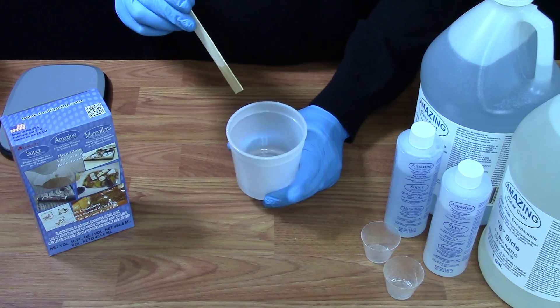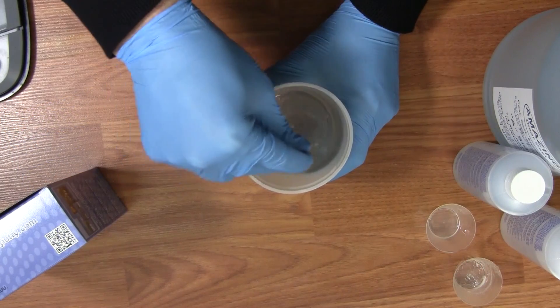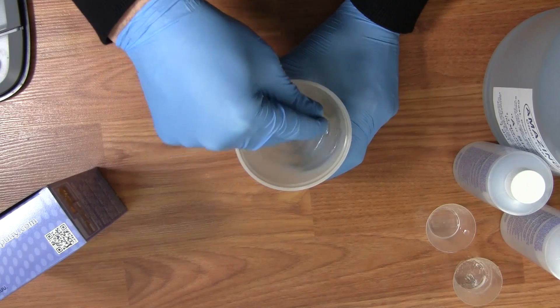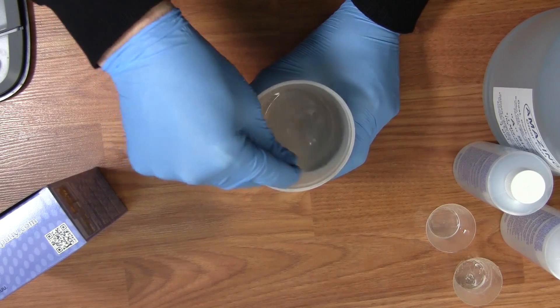Once you have each side combined into your mixing cup, you want to slowly mix this product. Amazing ClearCast has 30 minutes of open time, which is the amount of time that you have to pour it on your surface or pour it into a mold.